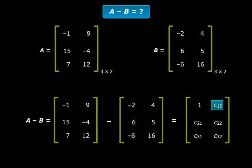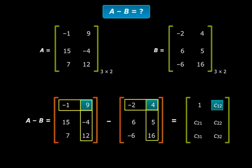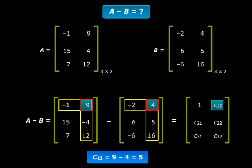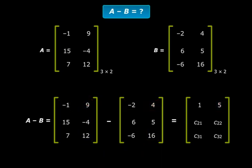What about C12? First row, second column. So look at matrices A and B. Let me highlight the elements in the first row and the second column there. 9 and 4. So the value of C12 is 9 minus 4. I write that. Similarly, I can find all the other four elements. So let me do it for you.